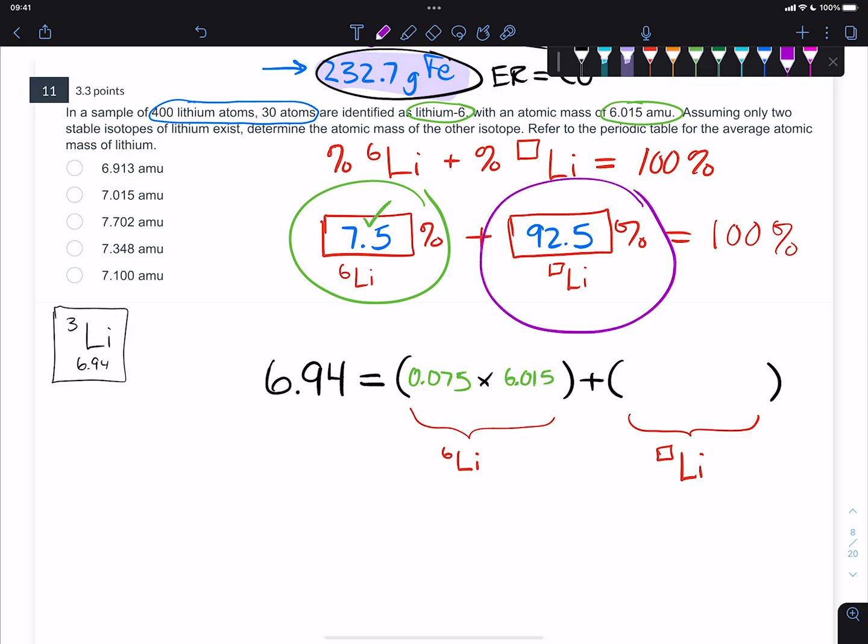Which is the rest of the atoms. So if 30 were lithium-6, then the other 370 have to be the other lithium isotope. We know that that's going to be 0.925. That's the abundance, the percent abundance, and we multiply that by the mass.